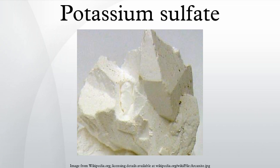The minerals include: Kainite (MgSO₄·KCl·H₂O); Schoenite (K₂SO₄·MgSO₄·6H₂O); Leonite (K₂SO₄·MgSO₄·4H₂O); Langbeinite (K₂Mg(SO₄)₃); Glaserite (K₃Na(SO₄)₂); and Polyhalite (K₂SO₄·MgSO₄·2CaSO₄·2H₂O). From some of these minerals, such as Kainite, the potassium sulfate can be separated because the corresponding salt is less soluble in water. Kieserite (MgSO₄·H₂O) can be combined with a solution of potassium chloride to produce potassium sulfate.